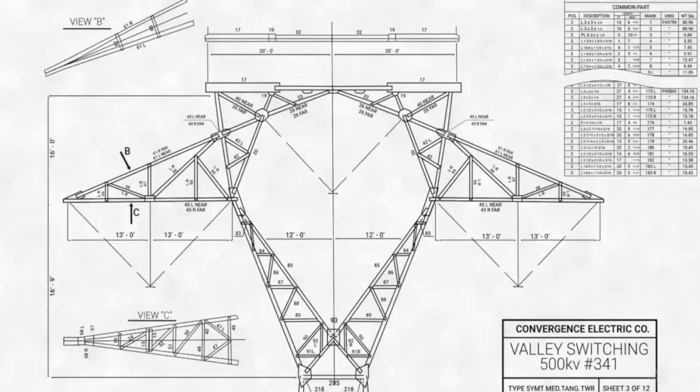An essential aspect of framing diagrams is the presentation of alternate views of a structure. Since a framing diagram is a two-dimensional representation of a three-dimensional object, alternate views are necessary to show the structure from all possible viewing angles.